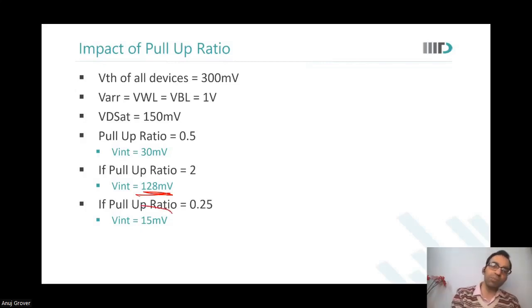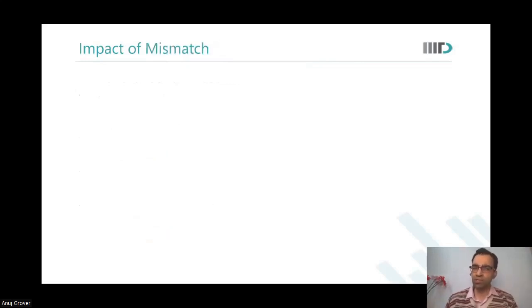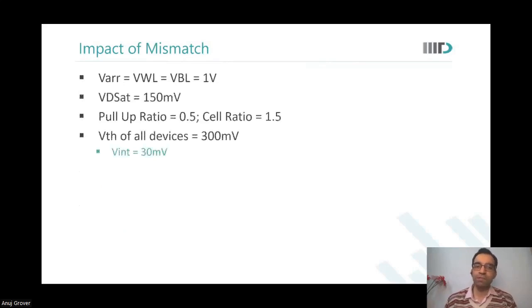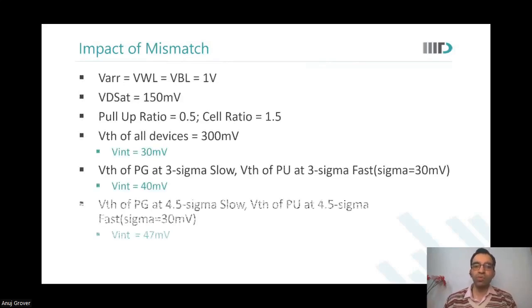When I keep a still weaker pull-up ratio, my VInt goes still lower. We keep a pull-up ratio of 0.5 for further analysis and now introduce mismatch. You will see that with mismatch as expected. So what we have done, we have said that pass gate is slower.